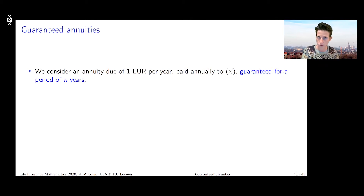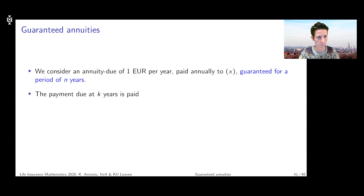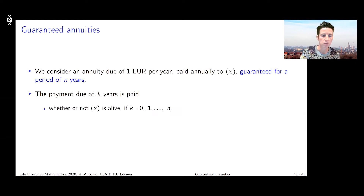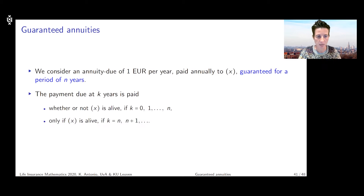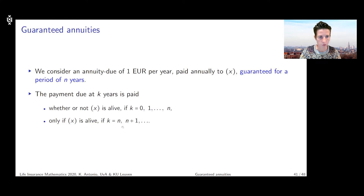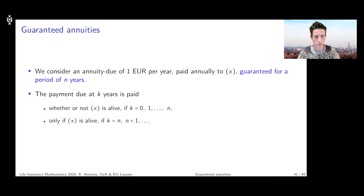For the guaranteed part, we only need to take financial discounting into account - we don't need to consider survivorship. The payment due at time k will be paid whether or not the policyholder is alive, for k equal to 0, 1, up to n minus 1. It's only paid if the policyholder is alive for k equal to n, n plus 1, and so on. In the annuity due case, the guaranteed period of n years refers to the n first payments done at times 0, 1, 2, up to n minus 1.